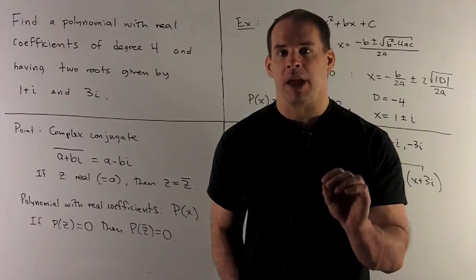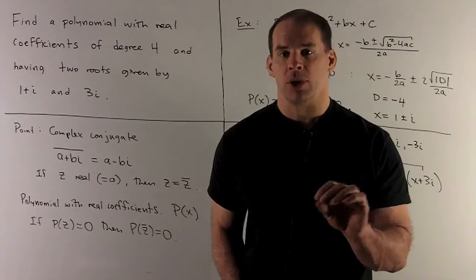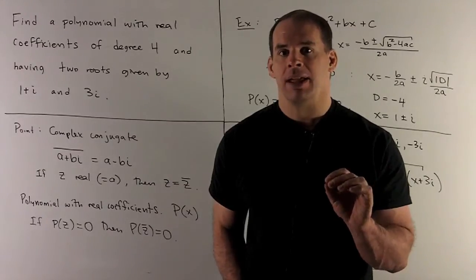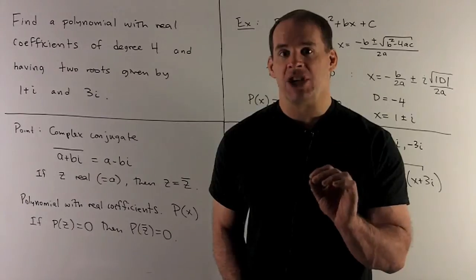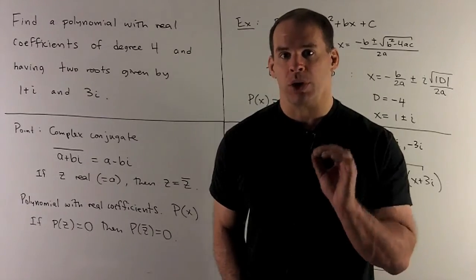But if I have a complex root a plus bi, where b is non-zero, so we have a non-zero imaginary part, then complex conjugation is going to give us another root of our polynomial. That's what we're going to need here.